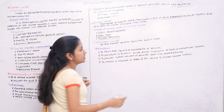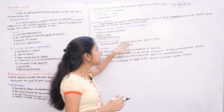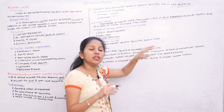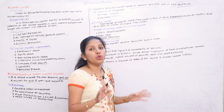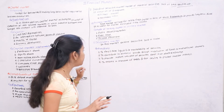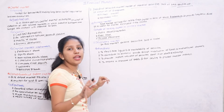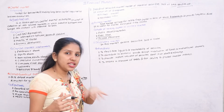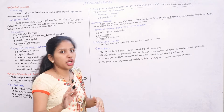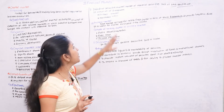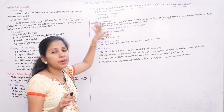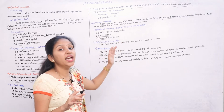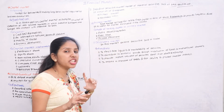The secondary market is where existing securities are sold or traded. In the secondary market, already-issued shares are bought and sold. This is different from the primary market — in the primary market, new shares are issued and sold for the first time.